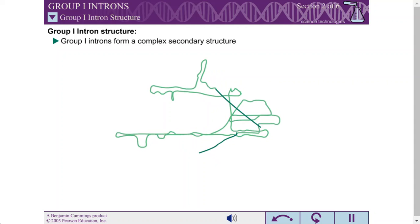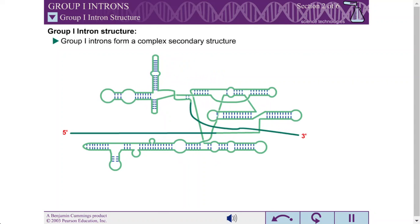Group 1 introns are capable of folding back onto themselves, forming a complex secondary structure.